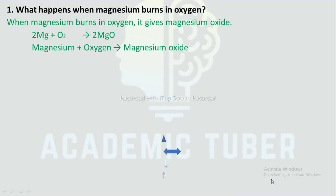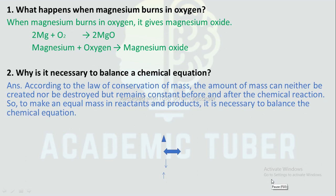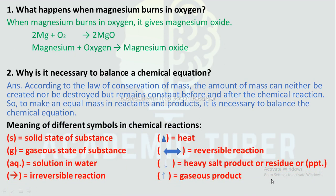Here are some questions related to this unit. What happens when magnesium burns in oxygen? When magnesium burns in oxygen, it gives magnesium oxide: 2Mg + O₂ → 2MgO. Why is it necessary to balance a chemical equation? According to the law of conservation of mass, the amount of mass can neither be created nor destroyed, but remains constant before and after the chemical reaction. So to make equal mass in reactants and products, it is necessary to balance a chemical equation. Meaning of different symbols in chemical reaction: (s) = solid state; (g) = gaseous state; (aq) = solution in water; arrowhead = irreversible reaction; delta = heat; double arrow = reversible reaction; downward arrow = precipitate or residue; upward arrow = gaseous product.